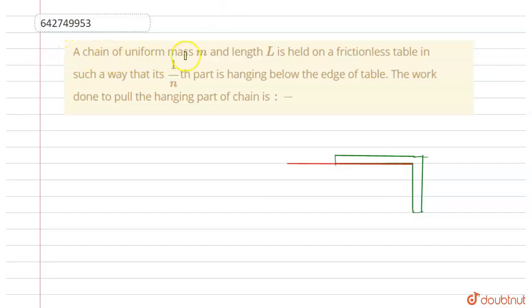A chain of uniform mass m and length l is held on a frictionless table in such a way that one by nth part is hanging below the edge of the table.